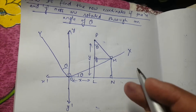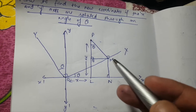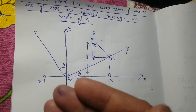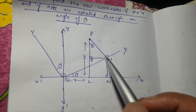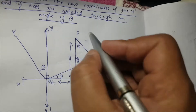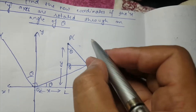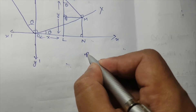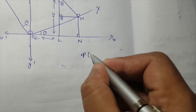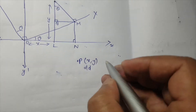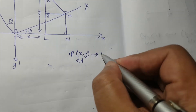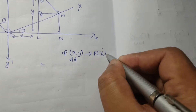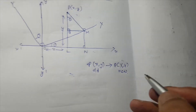We are interested in finding what happens to the new coordinates, or what is the relationship between the old coordinate and the new coordinate. Let's suppose a point P whose old coordinates are (x, y). We are interested in finding the new coordinates, capital X and capital Y.